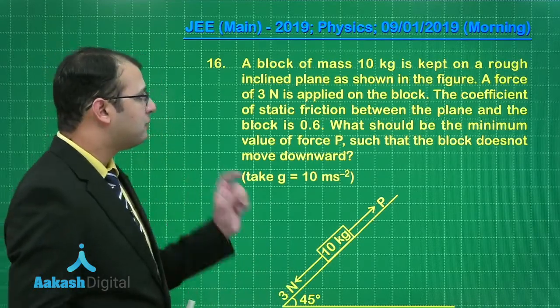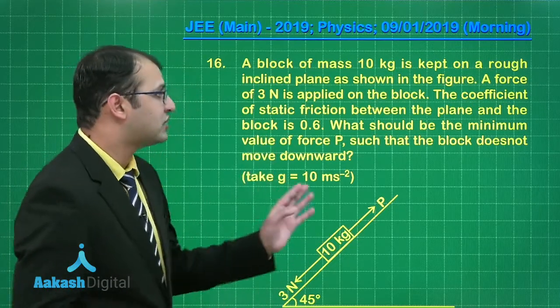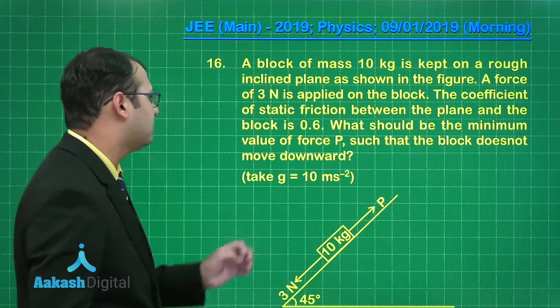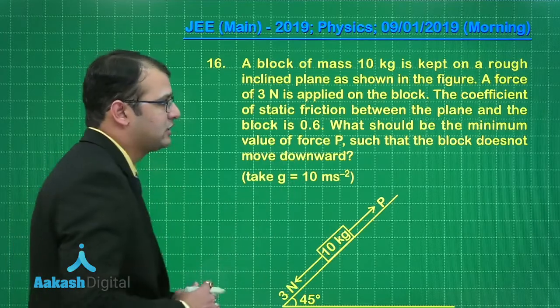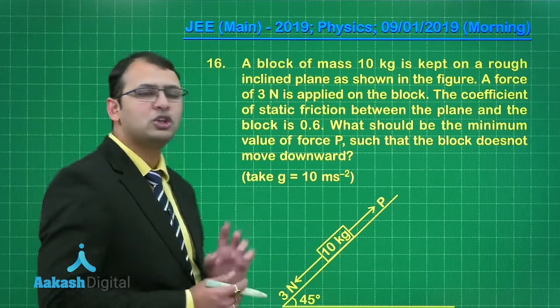A force of 3 Newton is applied on the block and it is acting downwards. The coefficient of static friction between the plane and the block is 0.6. What should be the minimum value of force P such that the block does not move downward.